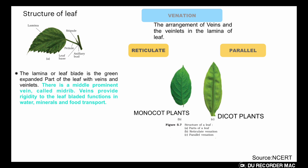Now for some theoretical points: this is the structure of a leaf from NCERT. The broad part of the leaf is called the lamina. The stalk connecting it to the stem is called the petiole. Between the petiole and stem is the leaf base, and there is also an axillary bud and stipule. The lamina, or leaf blade, is the green expanded part of the leaf.